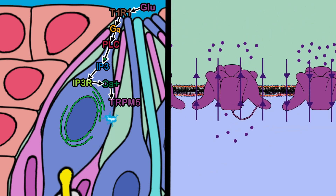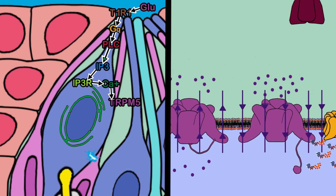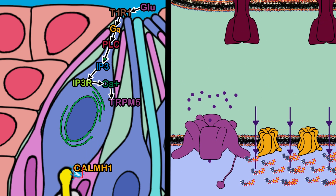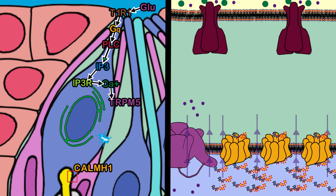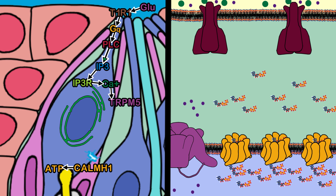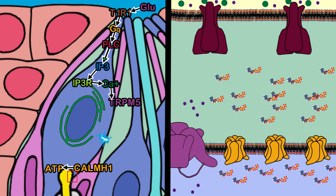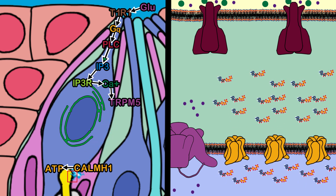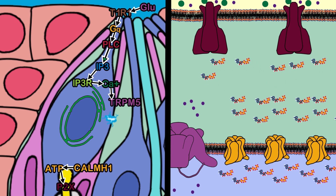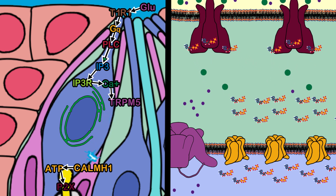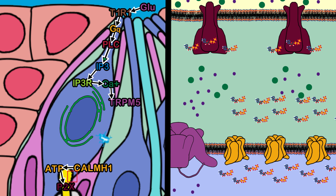The change in membrane voltage causes non-selective ion channels to open, releasing ATP as a neurotransmitter at a synapse with an efferent neuron. ATP serves as a ligand that opens ion channels called P2X, causing depolarization of the membrane in the taste nerve and initiating action potentials that travel down the efferent neuron of the taste nerve.